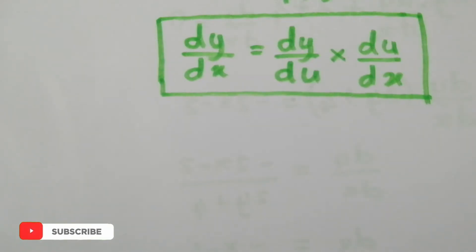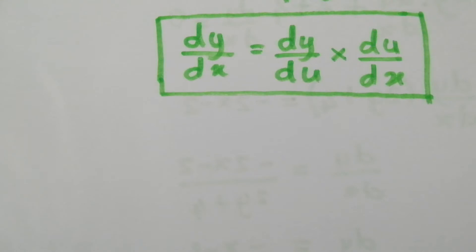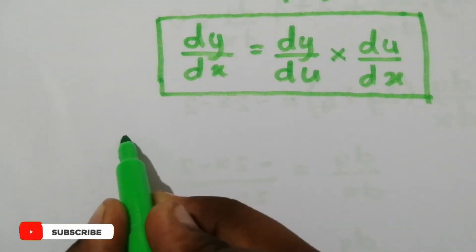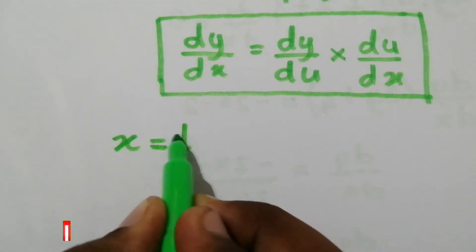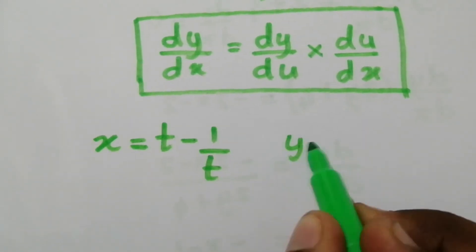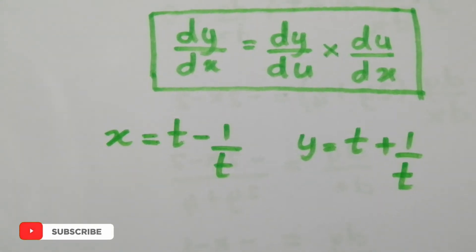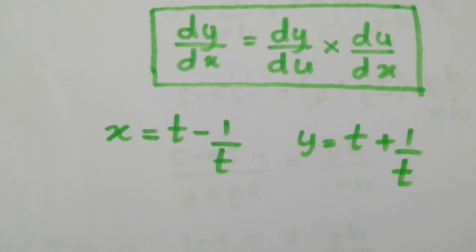By using this chain rule, we can find the differentiation of any parametric function. When the relation between x and y is complex and both x and y can be expressed in terms of a third variable, that third variable is known as the parameter and such a function is known as a parametric function. For example, x = t − 1/t and y = t + 1/t, where the parameter is t.